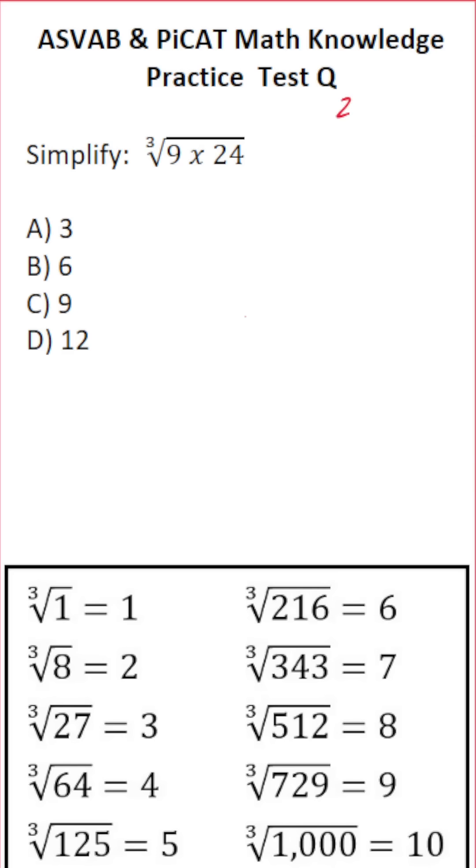So to get started, I'm going to do 24 times 9 very quickly. 4 times 9 is 36, carry a 3. 2 times 9 is 18, plus 3 is 21. So this is the cube root of 216.